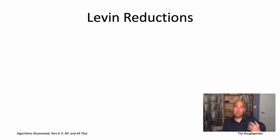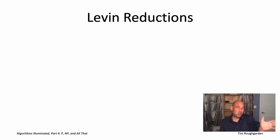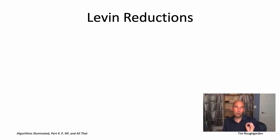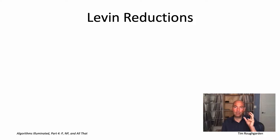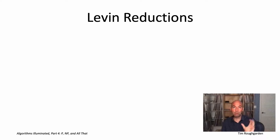A Levin reduction is a special case of a Cook reduction — Cook reductions being the reductions we've been using throughout this entire video playlist. A Levin reduction is a special restricted type of Cook reduction where intuitively it's only allowed to do the minimum imaginable amount of work. All it can do is invoke a subroutine for the problem B once, and the only other things it can do are preprocess its input to feed into B, and postprocess B's output to return as its final solution.